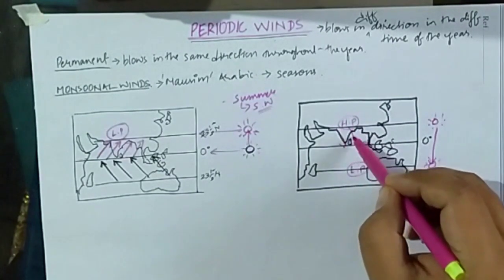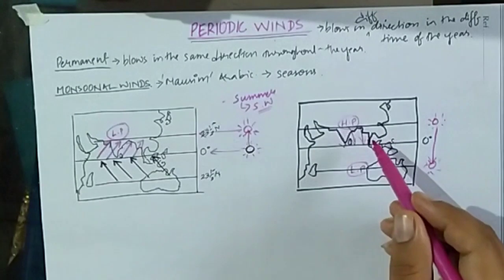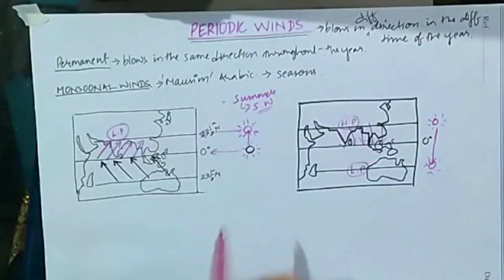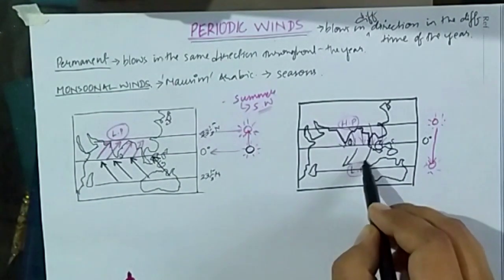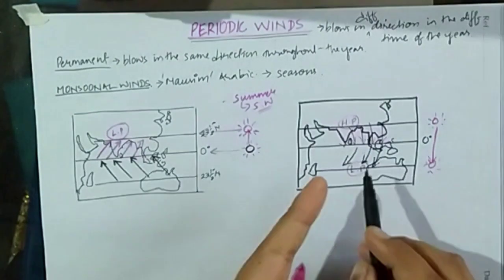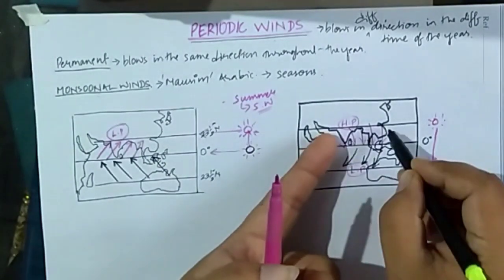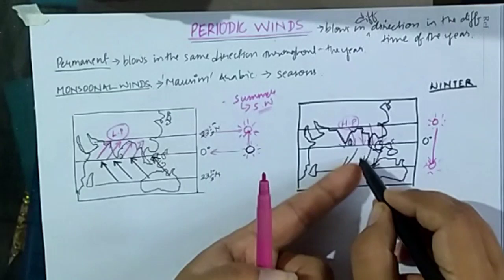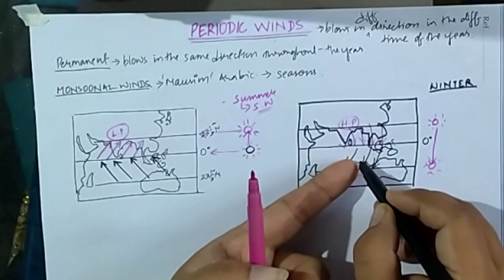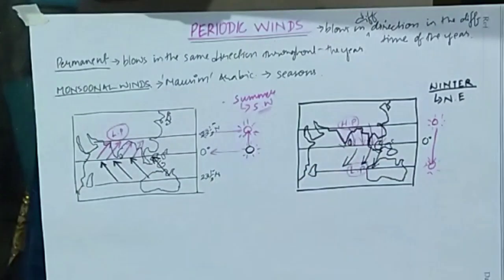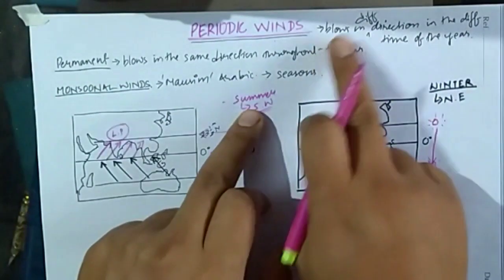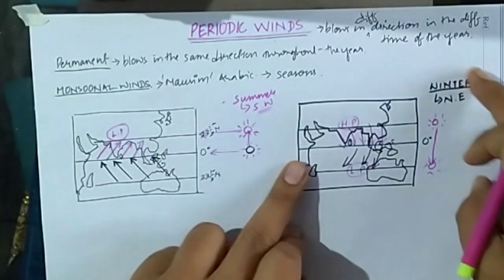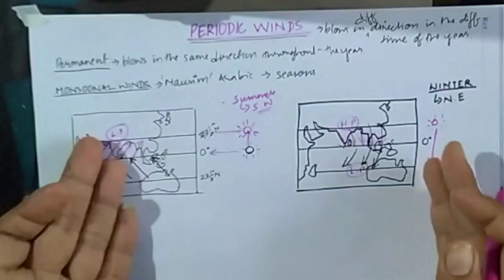Since winds always blow from high pressure to low pressure, the winds start withdrawing from the Tropic of Cancer and slowly move towards the Tropic of Capricorn. In the southern hemisphere they are deflected towards the left. When the sun is over the Tropic of Capricorn we experience winters, and the wind withdrawing from the Indian subcontinent comes from the northeast direction.